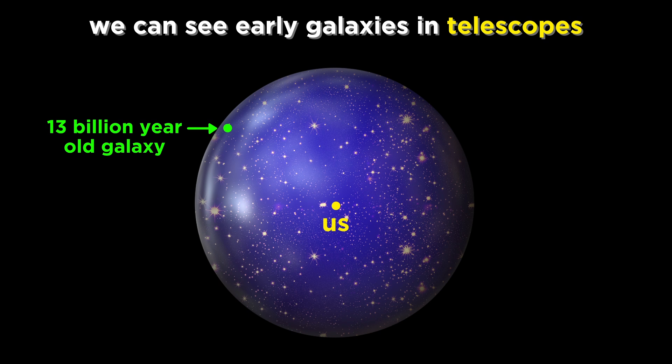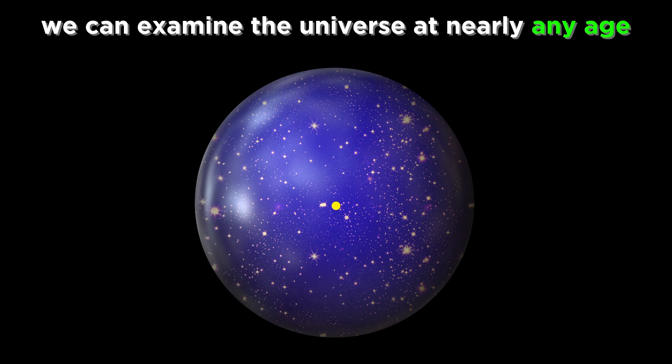In fact, we can even look out towards the edges of the observable universe to see some of these early galaxies forming, because the light they emanated at that time has taken the entire age of the universe to get to us. That's the beauty of observational astronomy. We can see the universe as it was at nearly any age, just by looking at objects that are more or less distant, taking into account how long it took the light from that object to get to us.